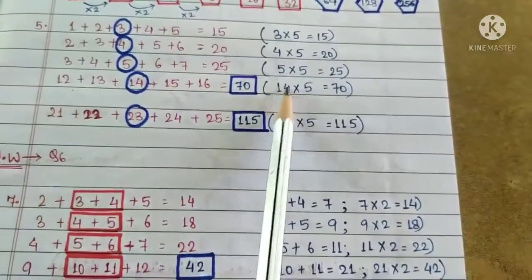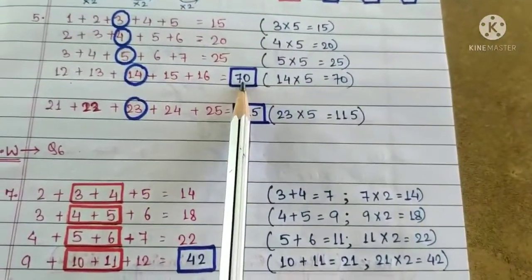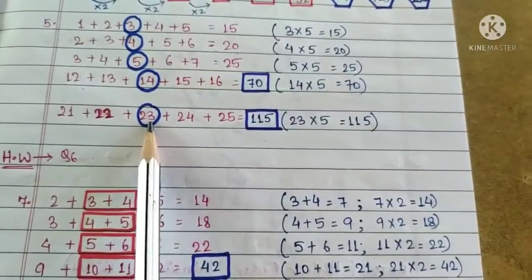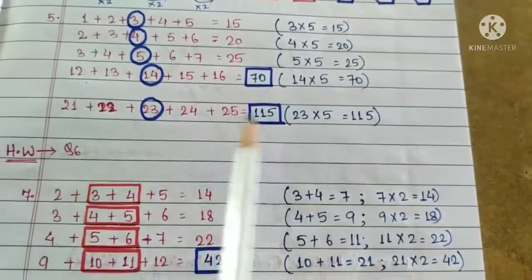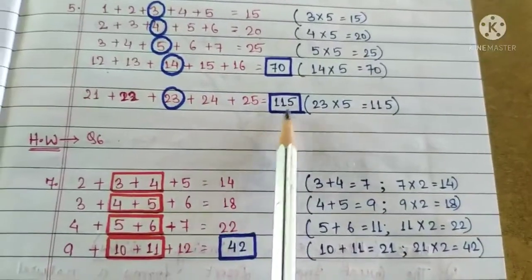14 multiplied by 5 will be 70. Similarly, the third number here is 23. 23 multiplied by 5 equals to 115.